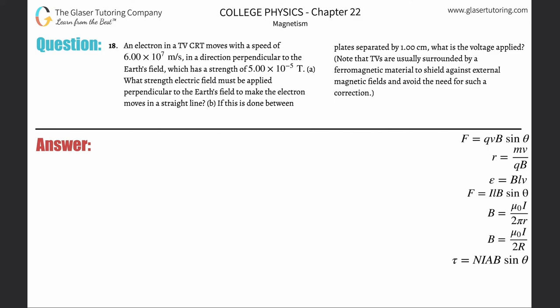Number 18: An electron in a TV CRT moves with a speed of 6 times 10 to the 7 meters per second in a direction perpendicular to the Earth's field, which has a strength of 5 times 10 to the minus fifth tesla. So the field they're talking about is the magnetic field there.